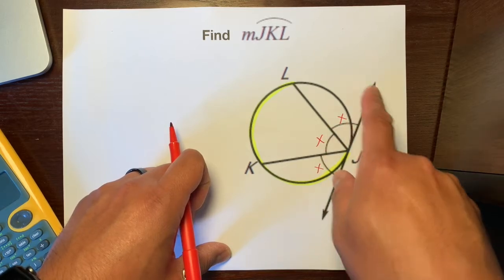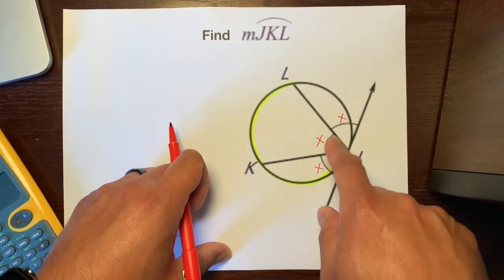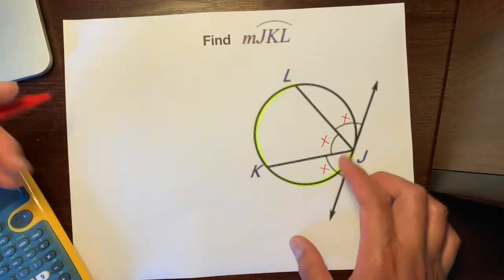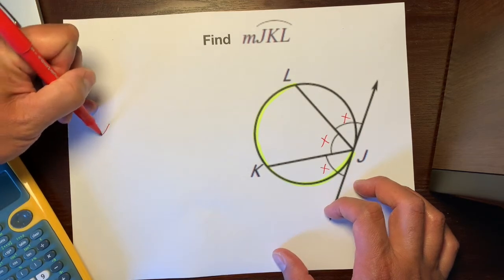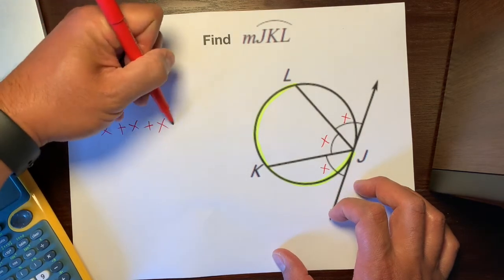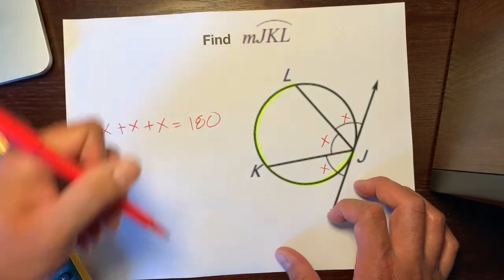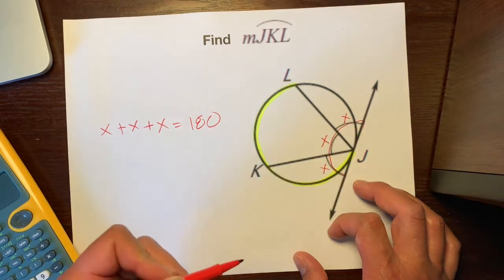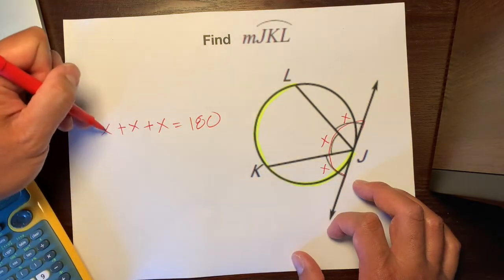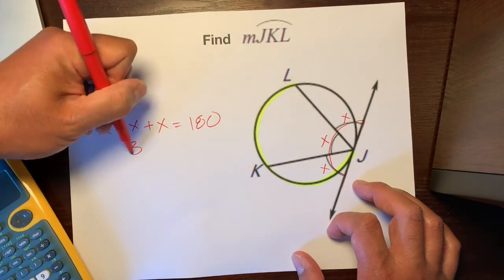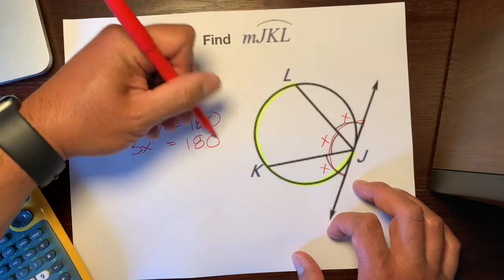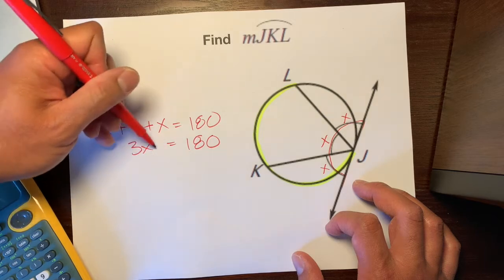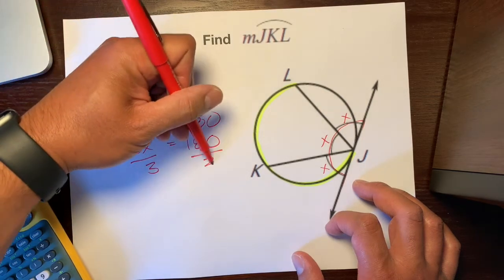So this whole line is 180 degrees so all three angles put together are supplementary. So we can figure out X this way. So we could just write X plus X plus X is equal to 180 degrees because all three angles make this straight line. So let's combine like terms. X plus X plus X is 3X is equal to 180 degrees. The opposite of multiplying 3 into X is dividing the 3 on both sides.